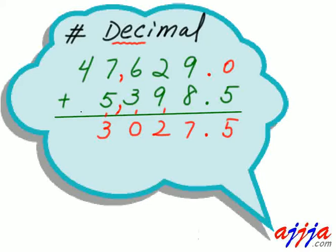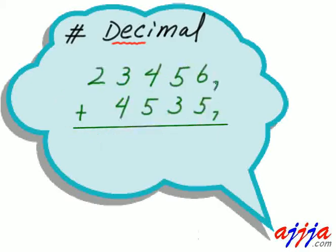So 3 is left over right here and 10 goes up by one. The comma sign is still there — that means 1,000. Now 4 plus 1 is 5. The result is 53,027.5.